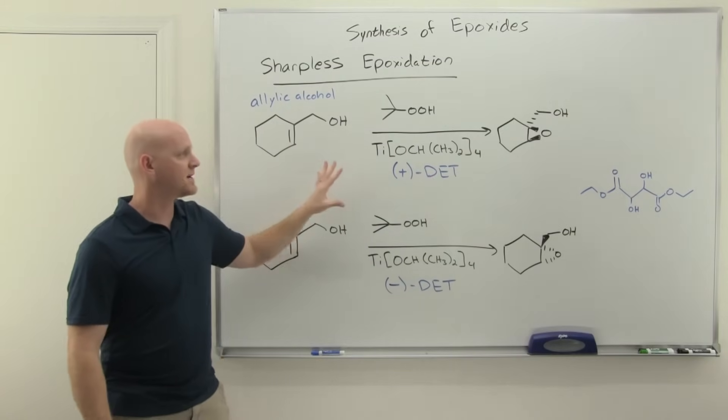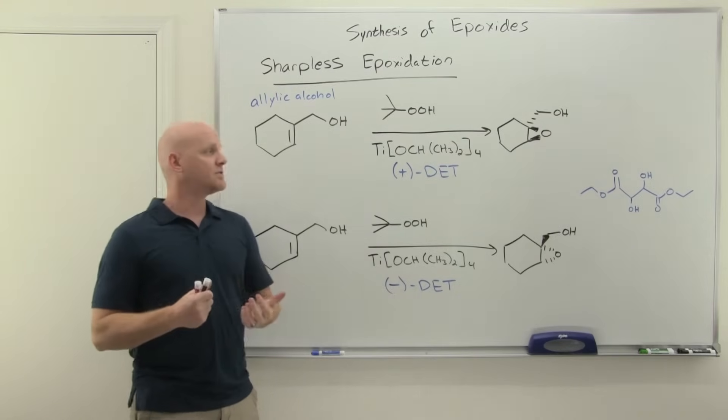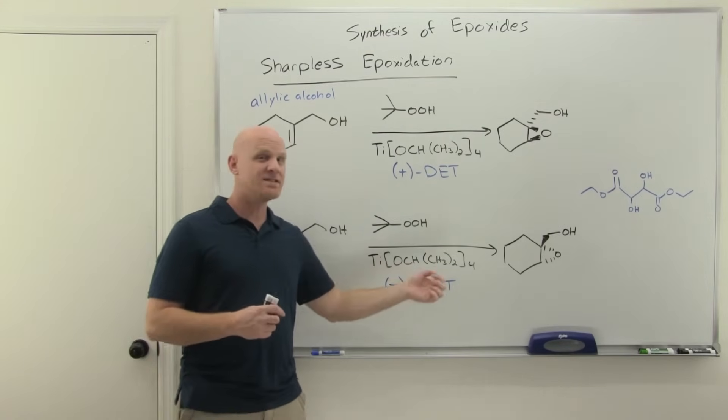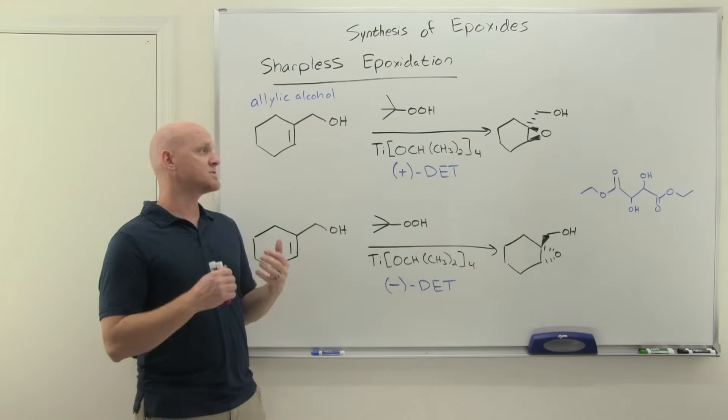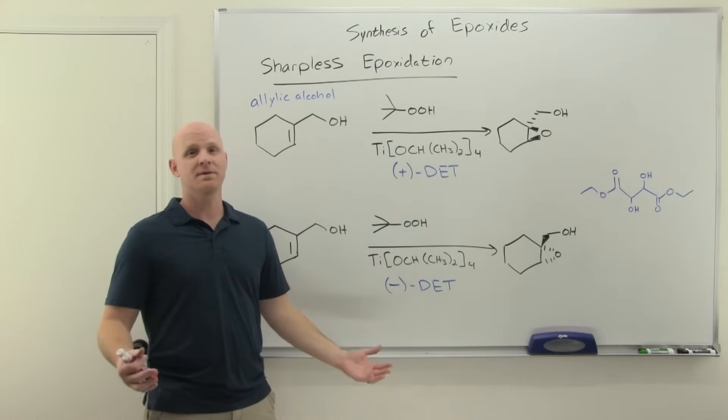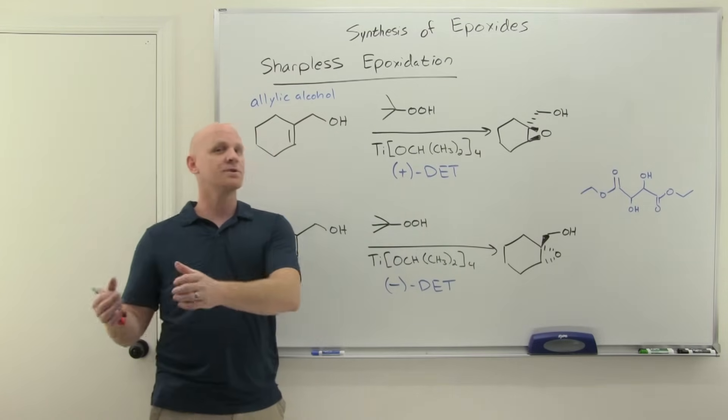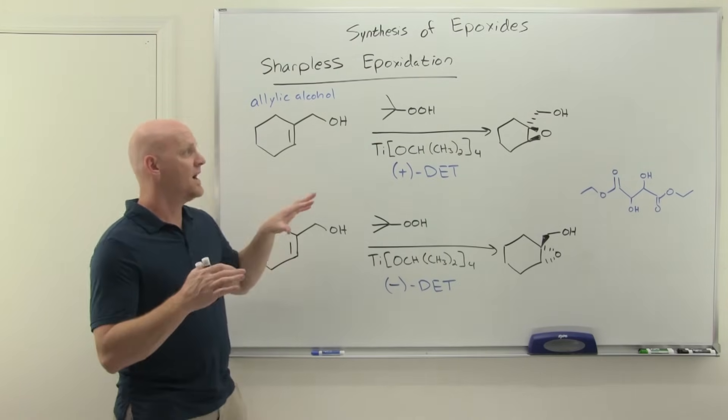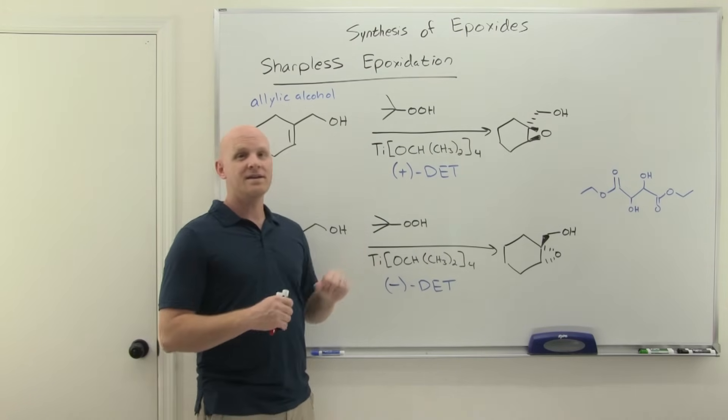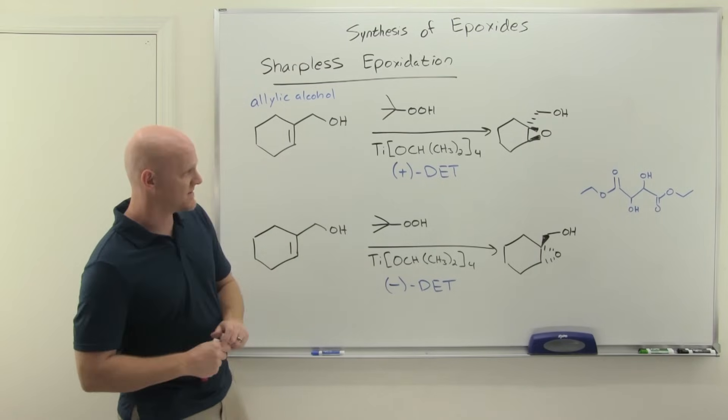However, the Sharpless Epoxidation allows you to get one versus the other. And this is kind of a big deal. Being able to produce just a single enantiomer in a reaction is a big deal. Most of the time, most of the reactions we do are going to form racemic mixtures. But this is a big deal. You might recall back in the 70s with thalidomide, one enantiomer had a certain effect, and the other one caused birth defects. So if you can get one enantiomer versus another, kind of a big deal. And people used to get Nobel Prizes for this kind of thing.